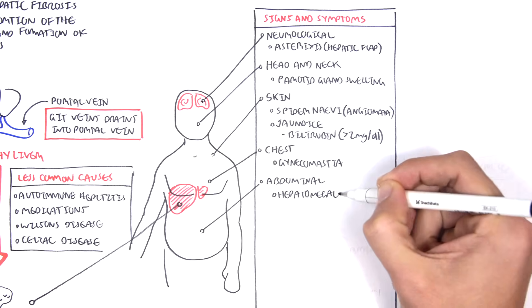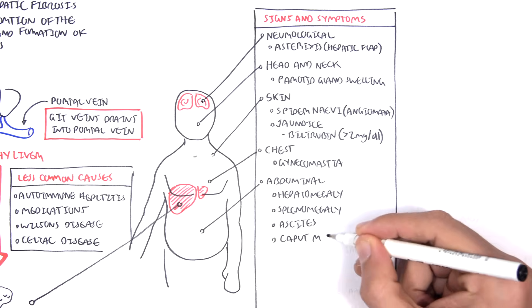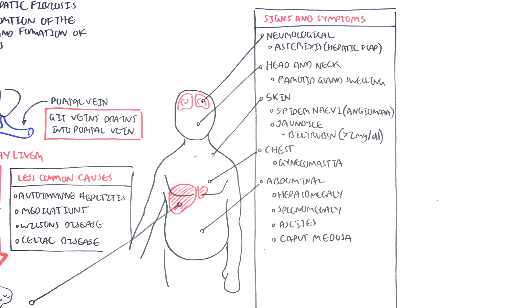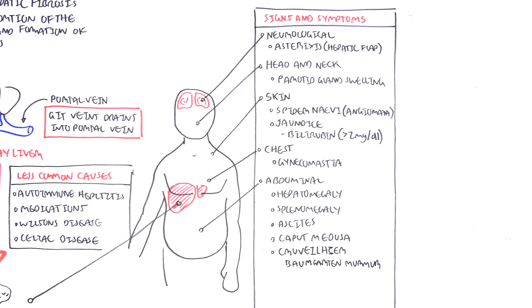Abdominal findings include hepatomegaly, splenomegaly, ascites, caput medusae, as well as a Cruveilhier-Baumgarten murmur.